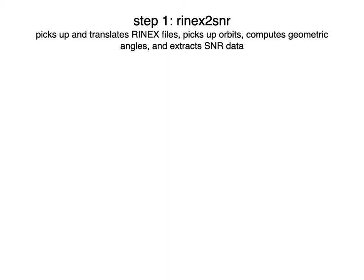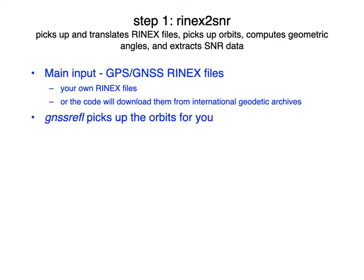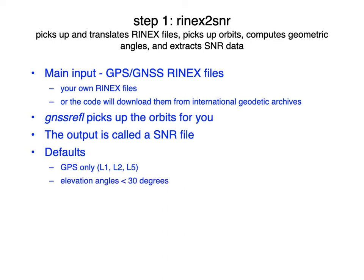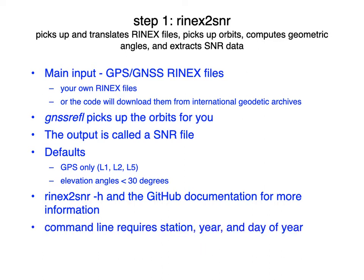rinex2snr picks up the RINEX files. You can use your own files if you wish, or the code will download them. The code picks up the orbits for you, and the output is what I'll call an SNR file. The defaults are GPS only and elevation angle less than 30 degrees. For more information, most of it's at GitHub, but you can also get a quick overview with rinex2snr -H. The command line only requires the station name, the year, and the day of year. This is going to be an example for site P041.